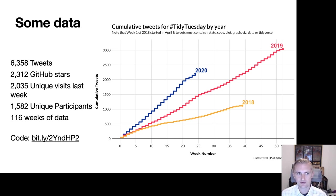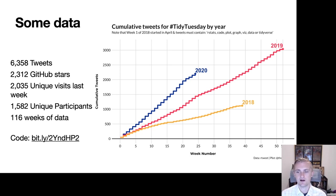The GitHub repo has about 2,300 stars. There were about 2,000 unique visits last week with 1,582 unique participants within the tweet data set. This represents 116 weeks of data, code, analysis, and plots that you can reference and look back on. There's also a link to the code that created this graph, and you can get access to all the tweets underlying this data set.